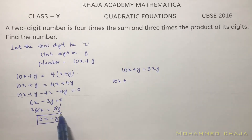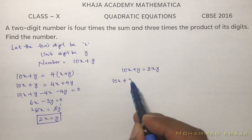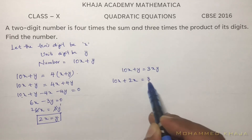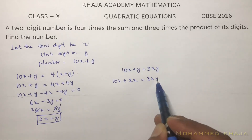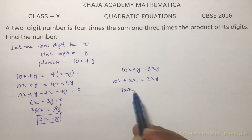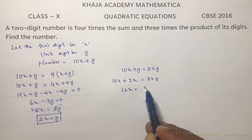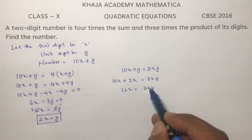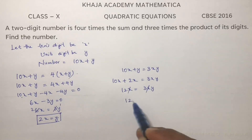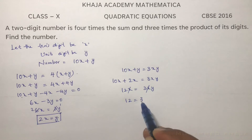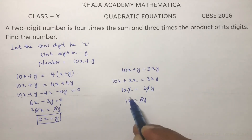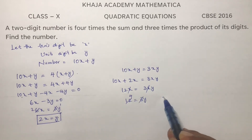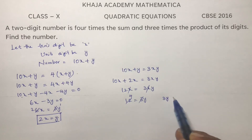Now substitute y equals 2x into the second equation. So 10x plus 2x equals 3 times x times 2x, giving 12x equals 3x squared. We can cancel x from both sides, leaving 12 equals 3y.